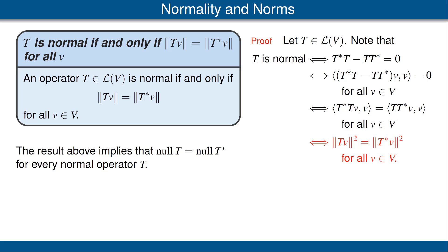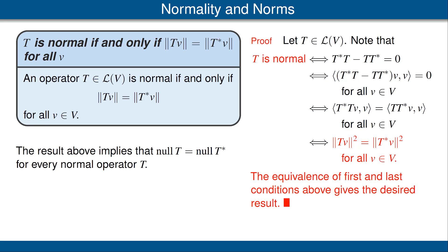Finally, in each of those inner products, we flip to the other side: in the first one, flip T* to the other side so it becomes T, giving ⟨Tv, Tv⟩, which is ‖Tv‖² on the left. On the right, flip T to the other side so it becomes T*, giving ⟨T*v, T*v⟩, which is ‖T*v‖². We've highlighted in red the first and last equivalences, and you can see those two conditions being equivalent is exactly the statement of the theorem. This completes the proof.